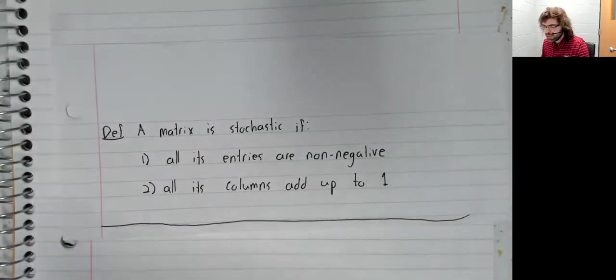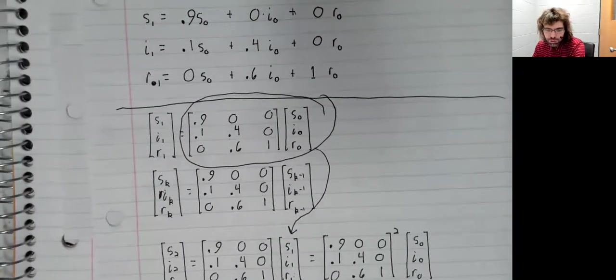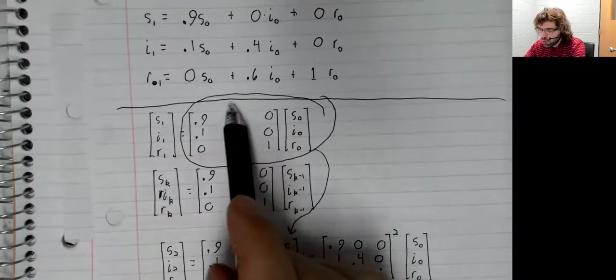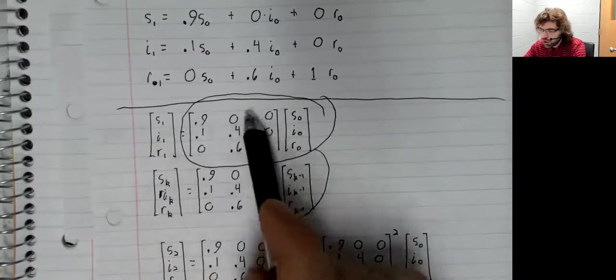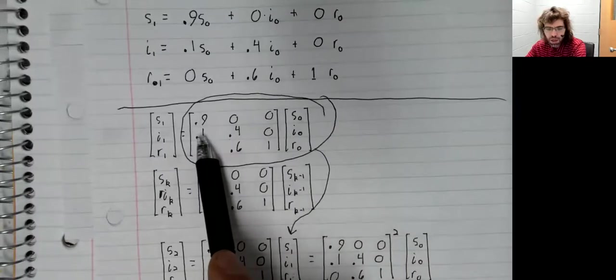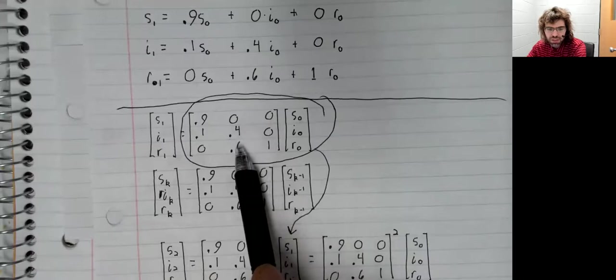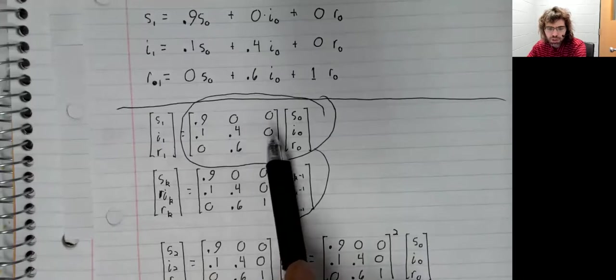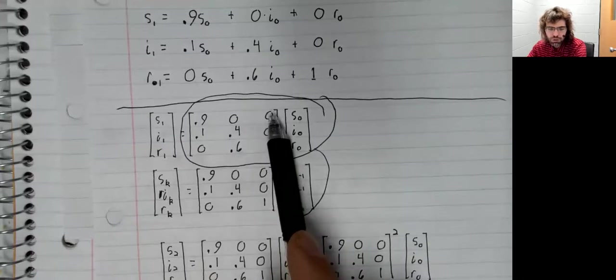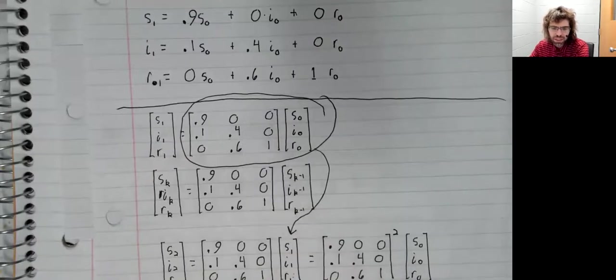From the previous video, this matrix has all non-negative entries. 0.9 plus 0.1 is 1, 0.4 plus 0.6 is 1, 1 plus 0 plus 0 is 1. So this is a stochastic matrix.